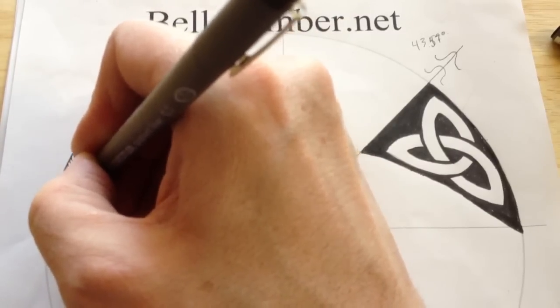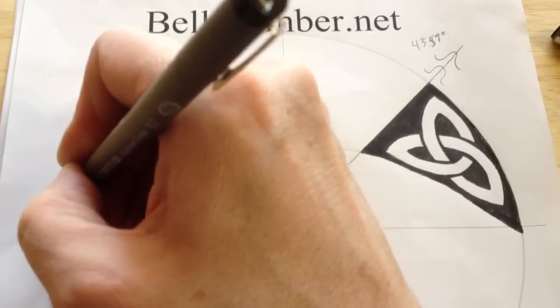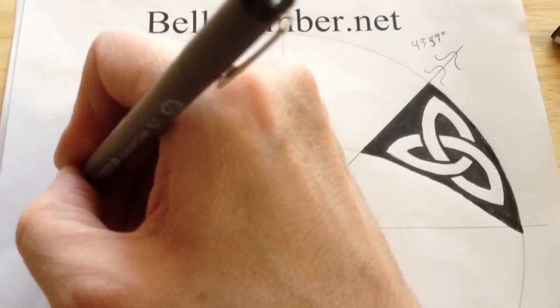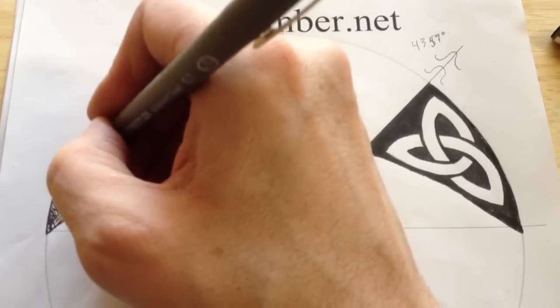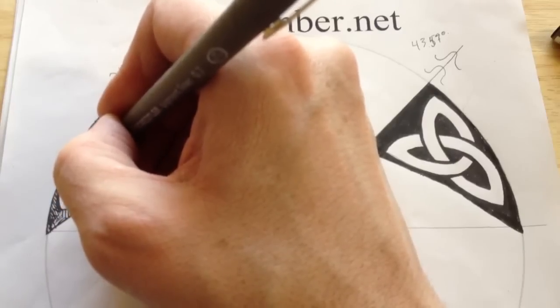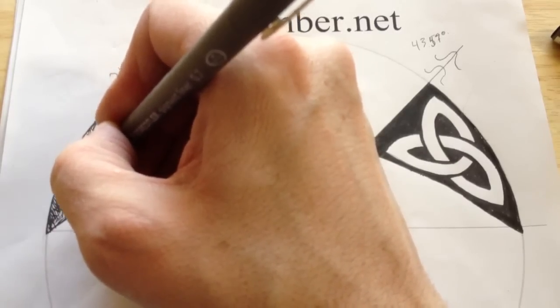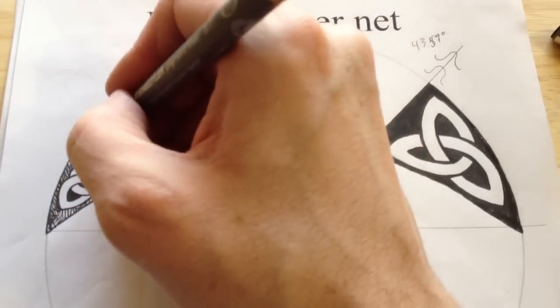Just imagine carving this in stone and making one mistake. Pretty sure you'd be fired off the team because those big stone slabs with the knotwork pattern on them were likely made by more than one person. I'm sure there was a designer that designed them, and then someone who specialized in cutting the pattern out.